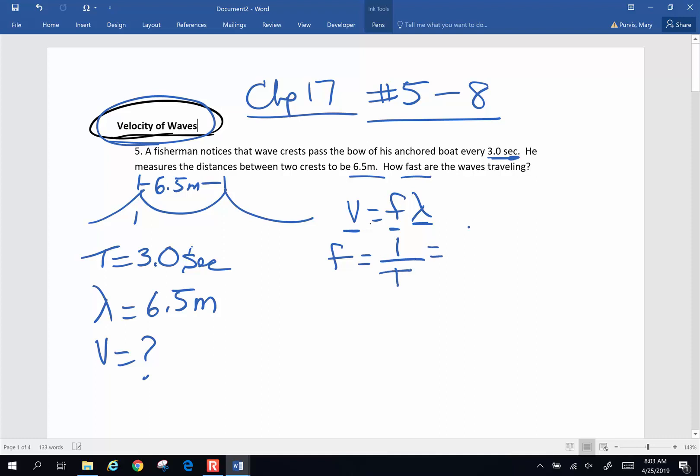And the period is 3 seconds. So if I pick up my calculator, 1 divided by 3 is 0.33 repeating. 1 over seconds and 1 over seconds is a hertz. So this is the frequency of my wave.